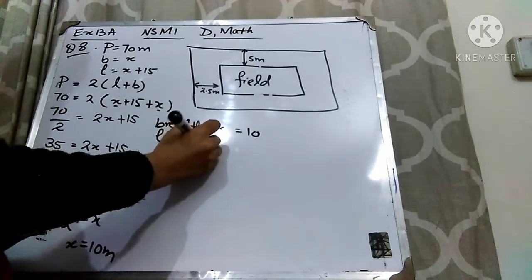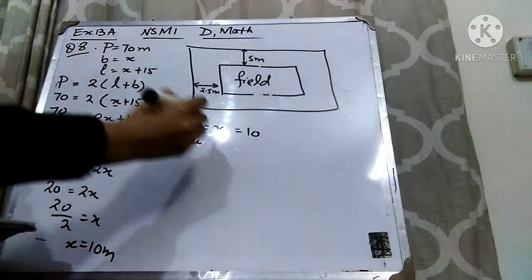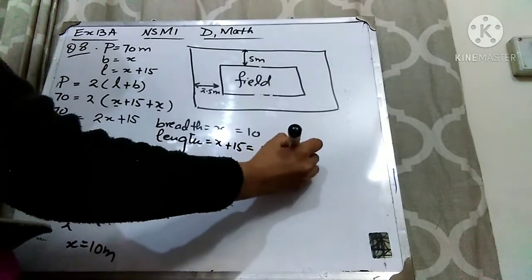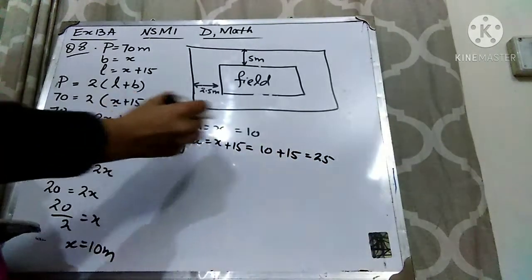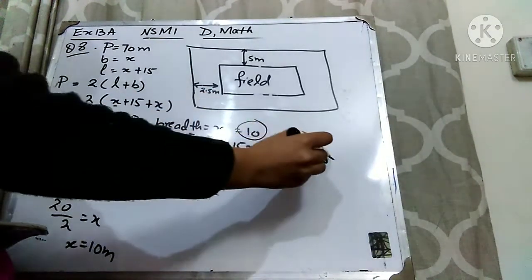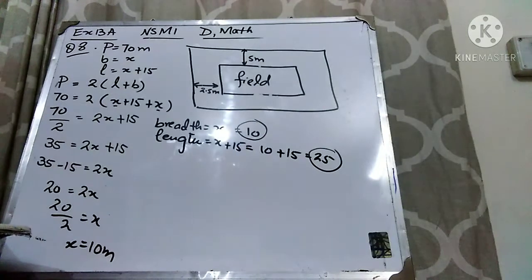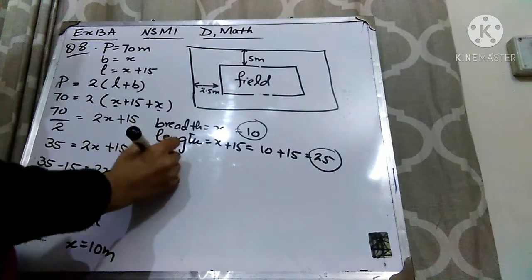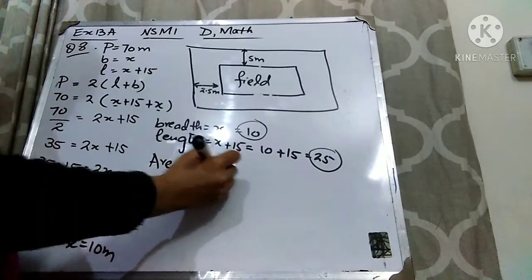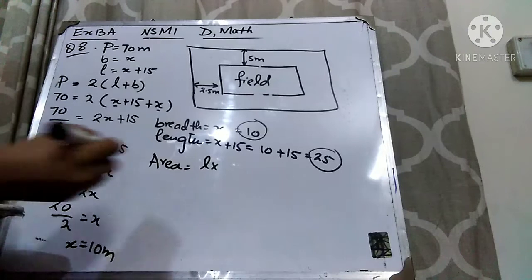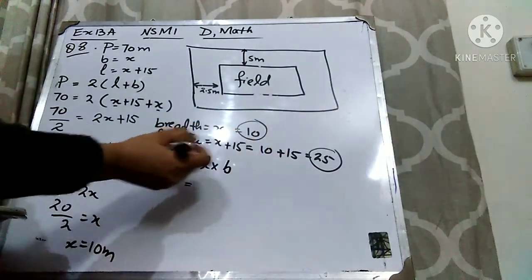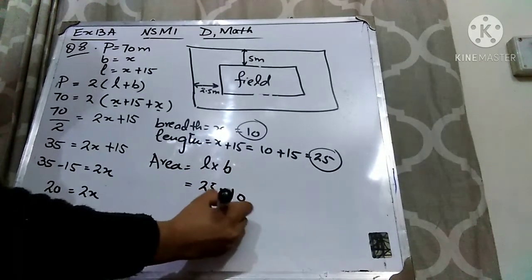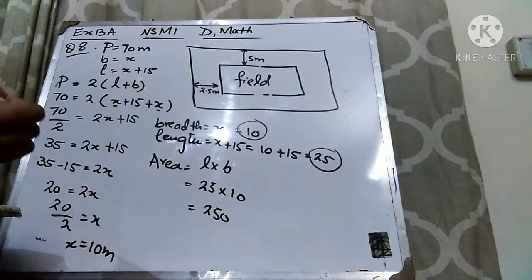Now we are going to find out the length. The length is x plus 15. As x is 10, so I will add 10 and 15 to get 25. So the breadth is 10 meters and the length is 25 meters. Now we can find out the area of the field. The formula to find out the area of any rectangular shape is length multiplied by breadth. Length is 25 and breadth is 10, so the area is 250 meter square.